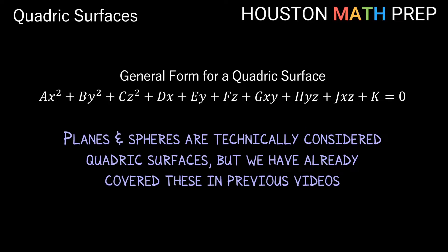You might notice that if we only have the first three quadratic terms with a constant, that could give us an equation for a sphere. Also, if we only have the linear dx, ey, or fz terms, that would give us the equation for a plane. So we can technically consider planes and spheres to be quadric surfaces, but we're going to focus on the quadric surfaces that aren't planes or spheres in this video.